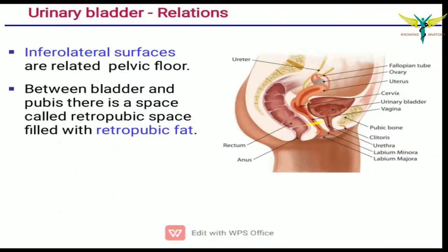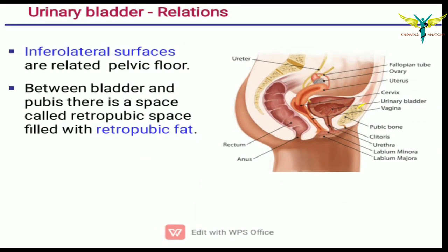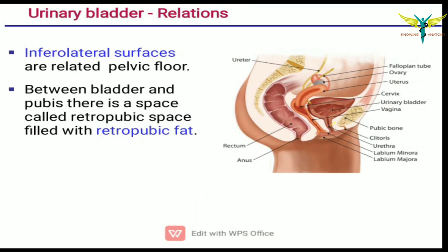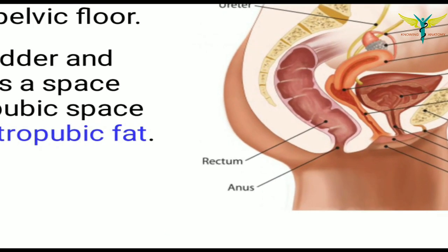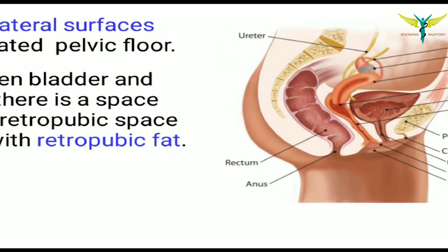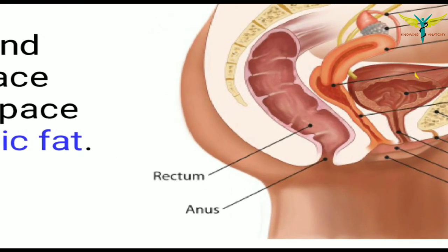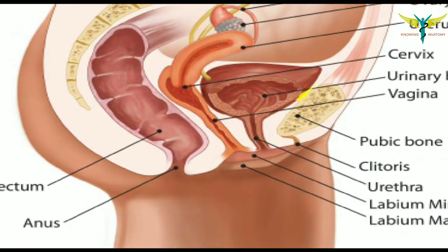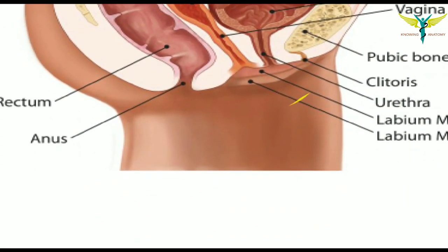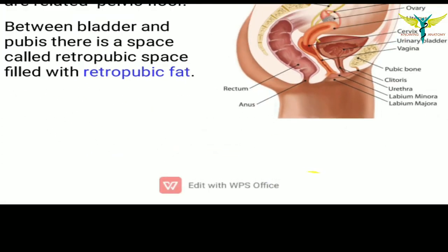The inferolateral surfaces are related to the pelvic floor in both males and females. Between the bladder and the pubis there is a space called the retropubic space, which is filled with retropubic fat.